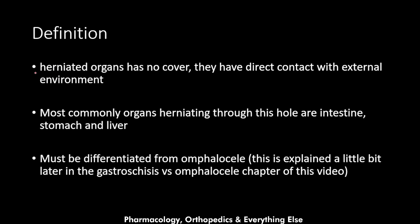In gastroschisis, the herniated organs have no cover — they have direct contact with the external environment. This differentiates gastroschisis from omphalocele, because in omphalocele there is a cover over the herniating organs, while in gastroschisis there is not. The most commonly herniated organs are the intestine, stomach, and liver. Gastroschisis must be differentiated from omphalocele, which we will explain later.